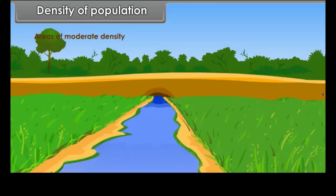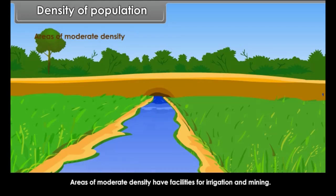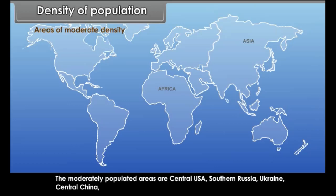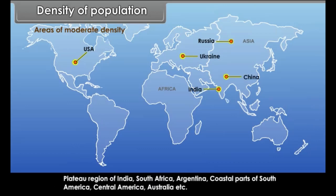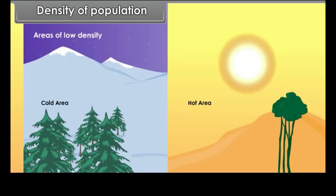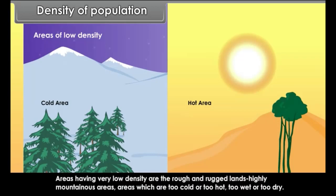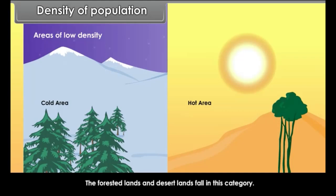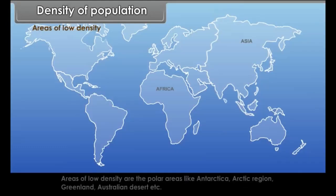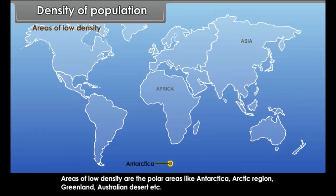Areas of Moderate Density: These areas have facilities for irrigation and mining. Moderately populated areas include Central USA, Southern Russia, Ukraine, Central China, the plateau region of India, South Africa, Argentina, coastal parts of South America, Central America, and parts of Australia. Areas of Low Density: These include rough and rugged lands, highly mountainous areas, areas too cold or too hot, too wet or too dry, and forested and desert lands, such as Antarctica, the Arctic region, Greenland, and the Australian desert.